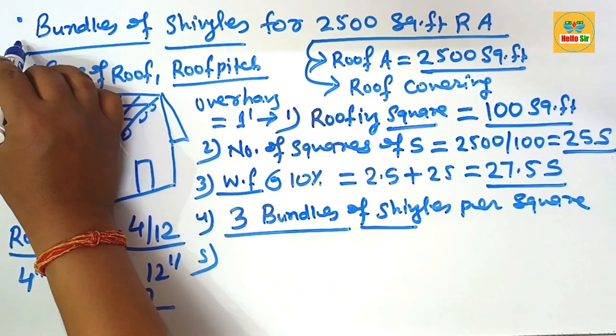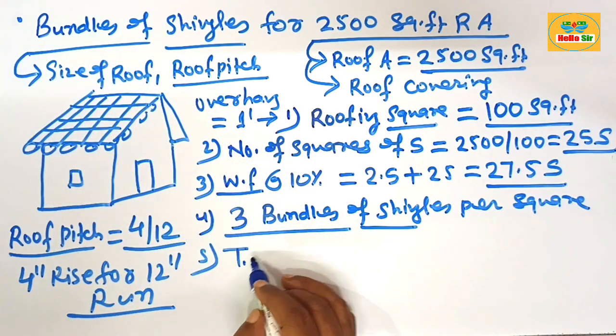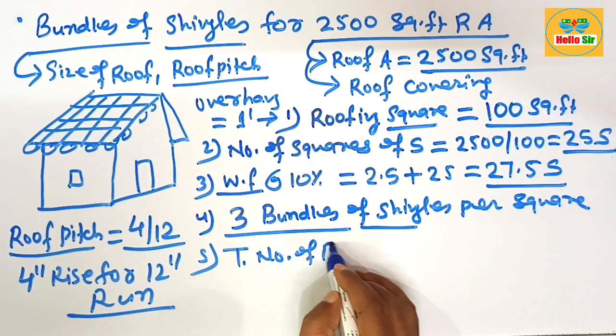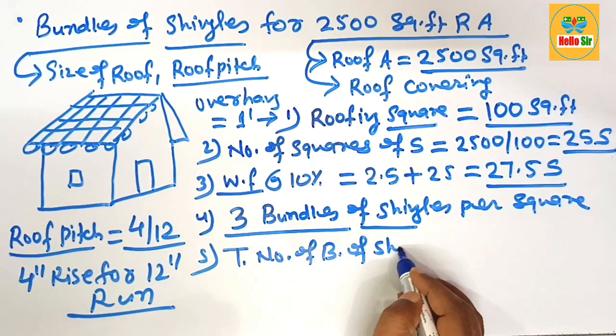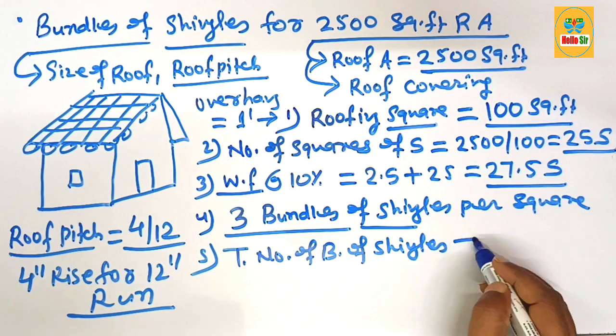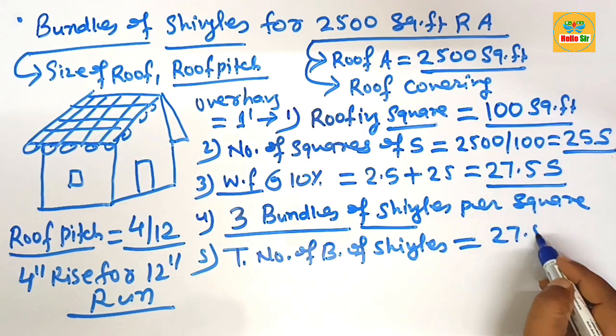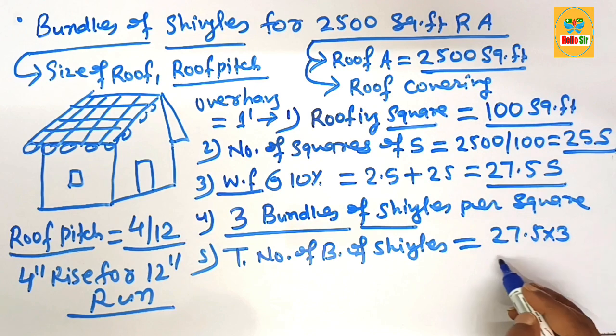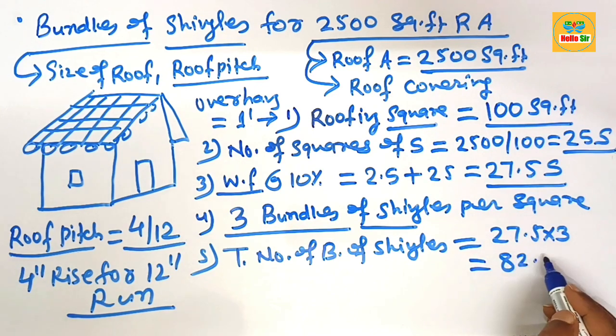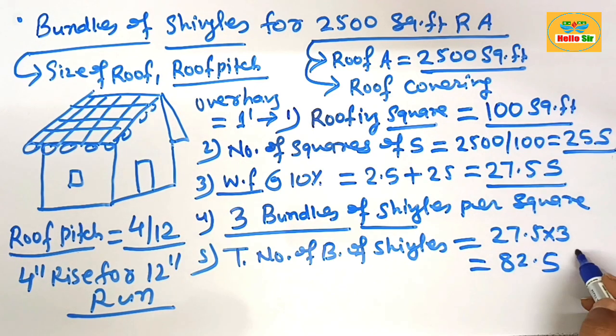And you have to find out here the numbers of total numbers of bundles of shingles require. You just multiply 27.5 by 3. That will come about 82.5 bundle.